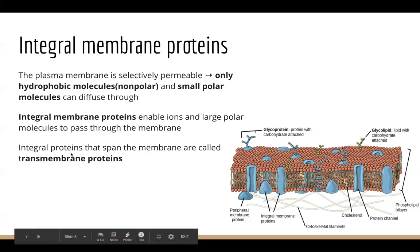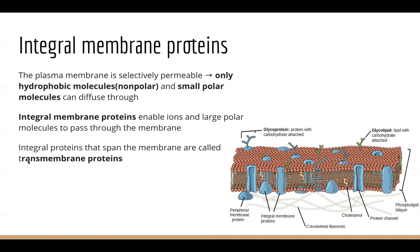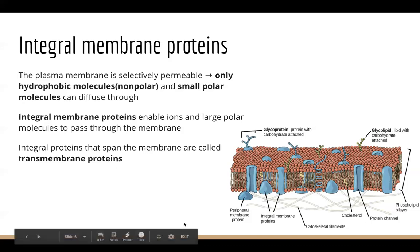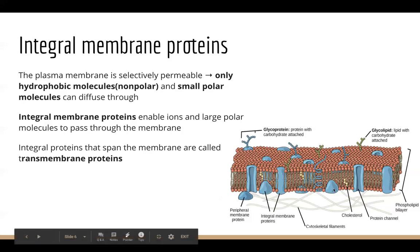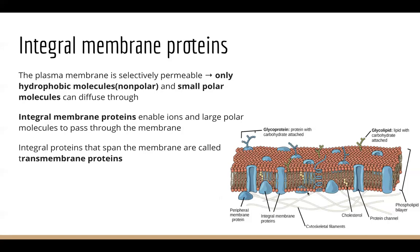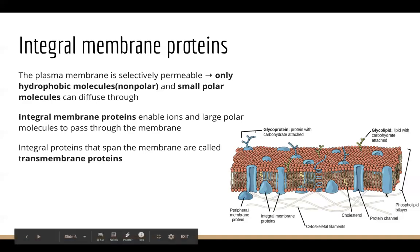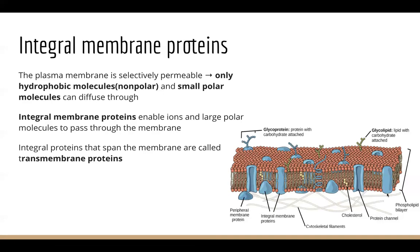One type of integral membrane protein is called a transmembrane protein. Transmembrane proteins are the ones that span the whole membrane. All proteins embedded in the membrane are called integral membrane proteins, and if a protein spans the entire membrane, then it is specifically called a transmembrane protein. So a transmembrane protein is one type of integral membrane protein.